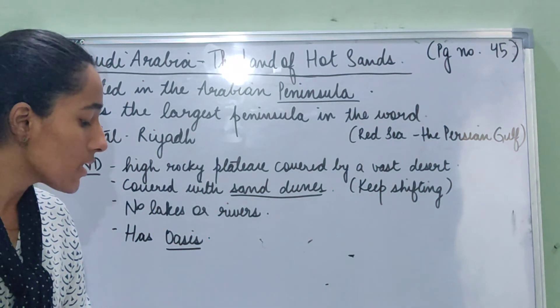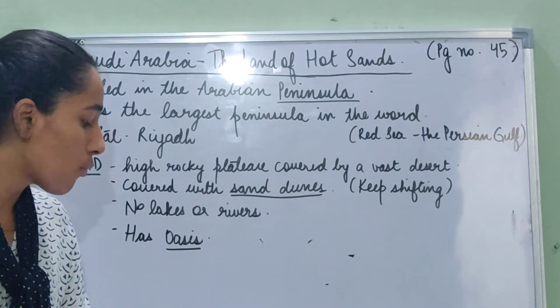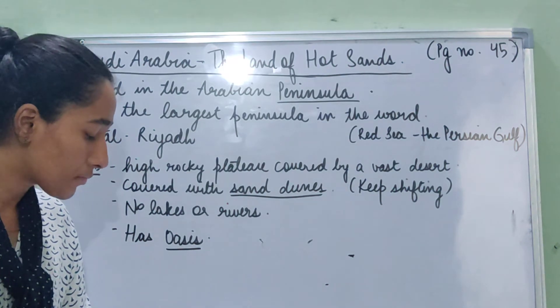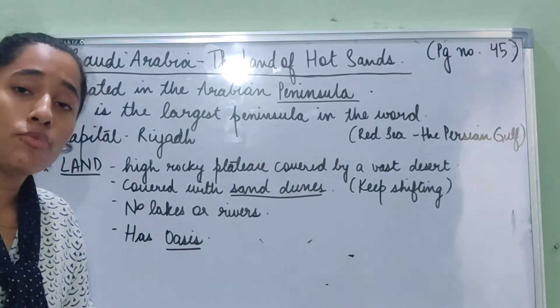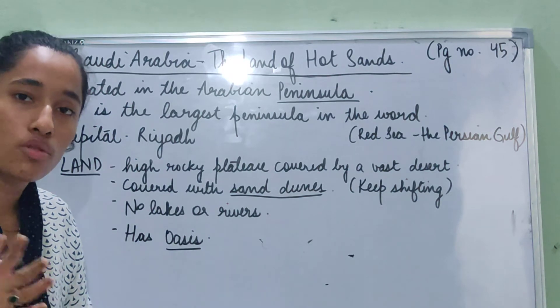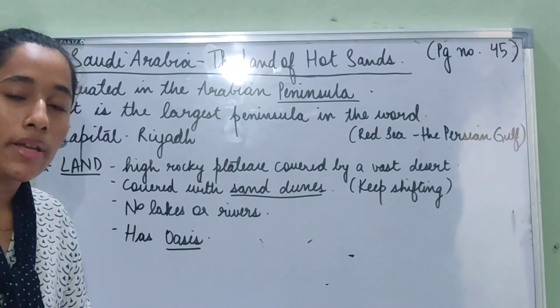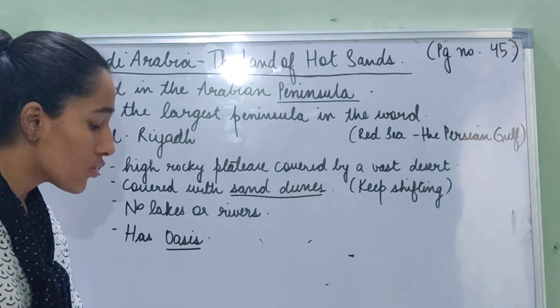Strong winds and dust storms keep blowing and shifting the sand dunes from one place to another. So the sand dunes keep shifting their positions because of these strong winds.